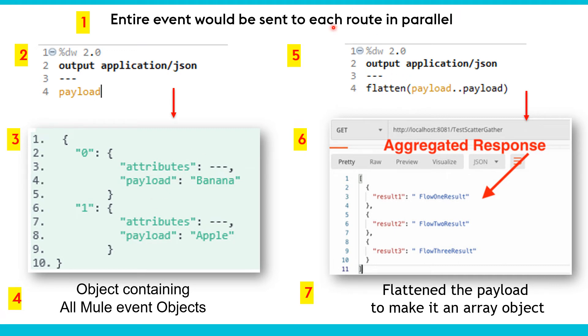Another thing is we can use the flatten function, which will make your payload into an array object. How are arrays distinct from objects? Objects are enclosed in curly braces. Arrays are enclosed in square brackets, and arrays are comma-separated multiple values.